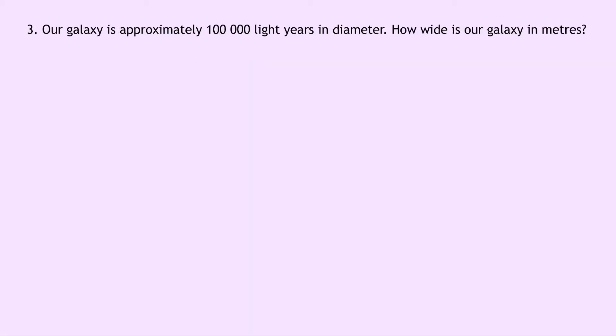Moving on to light years now, question 3 says that our galaxy is approximately 100,000 light years in diameter. How wide is our galaxy in metres? Well we've got a number in light years so we want to convert from light years to metres and to do this we expect to get a much larger number so we're going to multiply it by how many metres are in one light year.